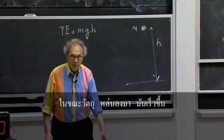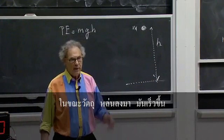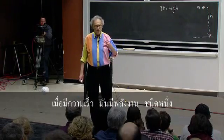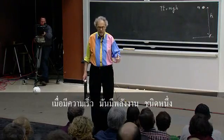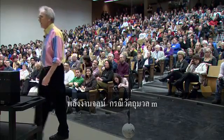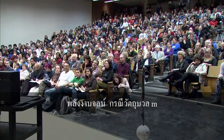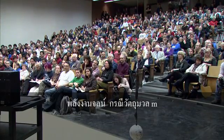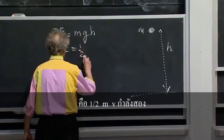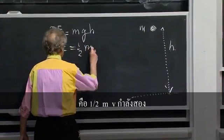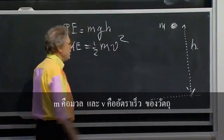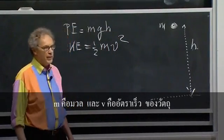As the object goes down, it picks up speed. And we associate with speed an energy which we call kinetic energy. The kinetic energy of an object with mass m is one-half mv squared, where m is the mass and v is the speed of that object.